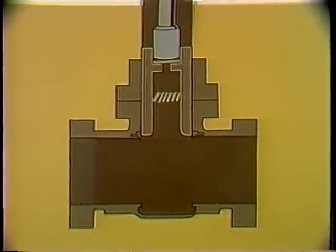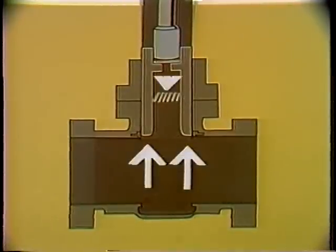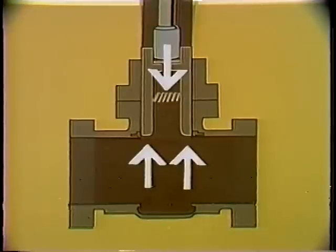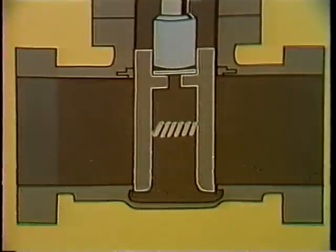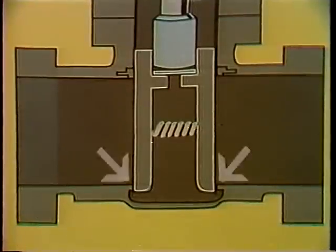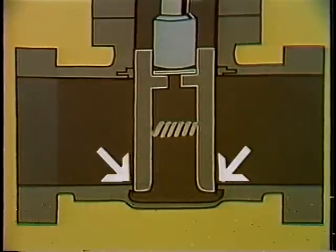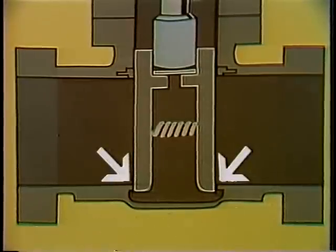The double disk type is made of two separate disks with a spring mechanism between them. The spring holds each disk in place against its seat while the valve is being operated. When the double disk is lowered, there is no wedging or jamming action as it closes over the seat. This feature makes the double disk particularly adaptable to motor operating mechanisms, such as steam stop valves.